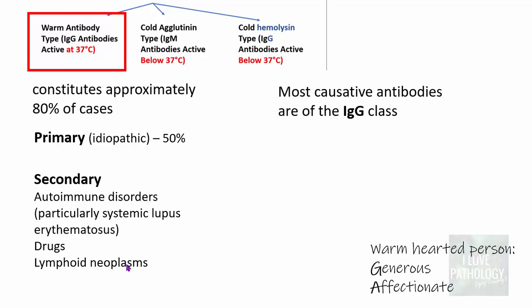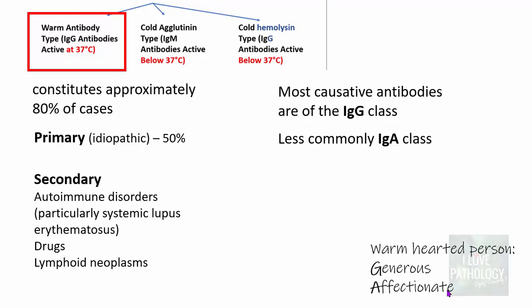The causative antibodies are most often of the IgG class, less commonly IgA. A simple way to remember: warm antibody type consists of IgG and IgA — think of a warm-hearted person who is generous and affectionate, so IgG and IgA.